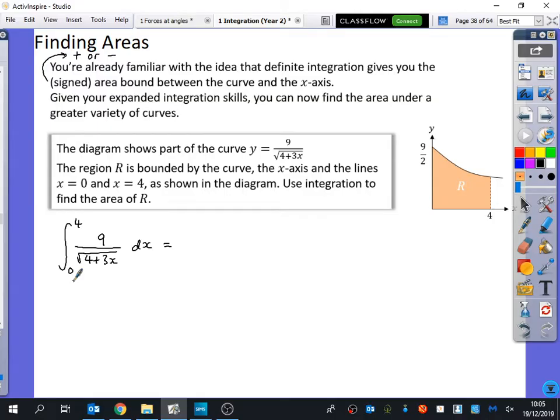Not going to do any substitution. Not going to do any ln, because the derivative of the denominator is not the numerator. Instead, let's rewrite it. Between 0 and 4, it's 9(4 + 3x) to the power of minus 1 half dx. This is just integrating functions that we did in the first or second lesson of integration, which are functions of the form f(ax + b). Do you remember how you integrate those kind of functions? You integrate them as normal, and you also do 1 over a. In this case, a is going to be 3.